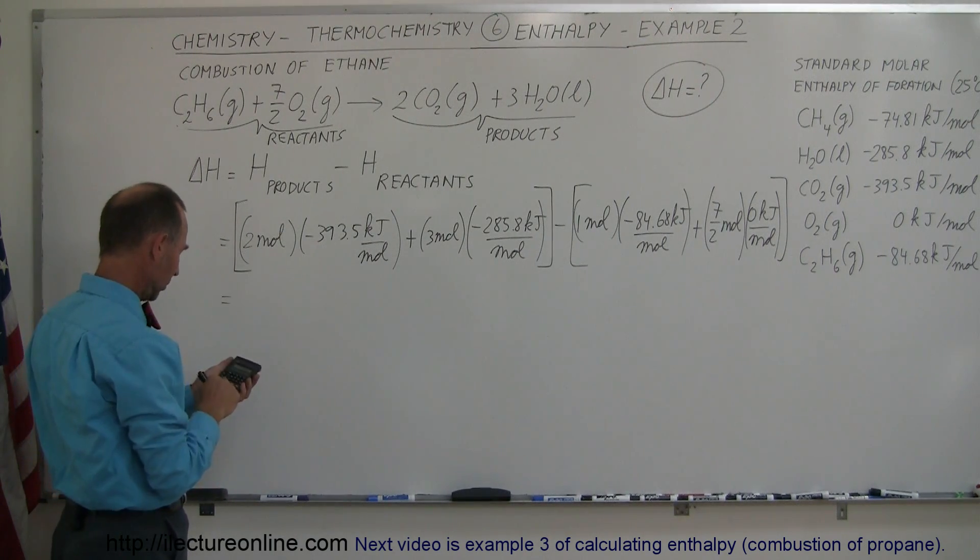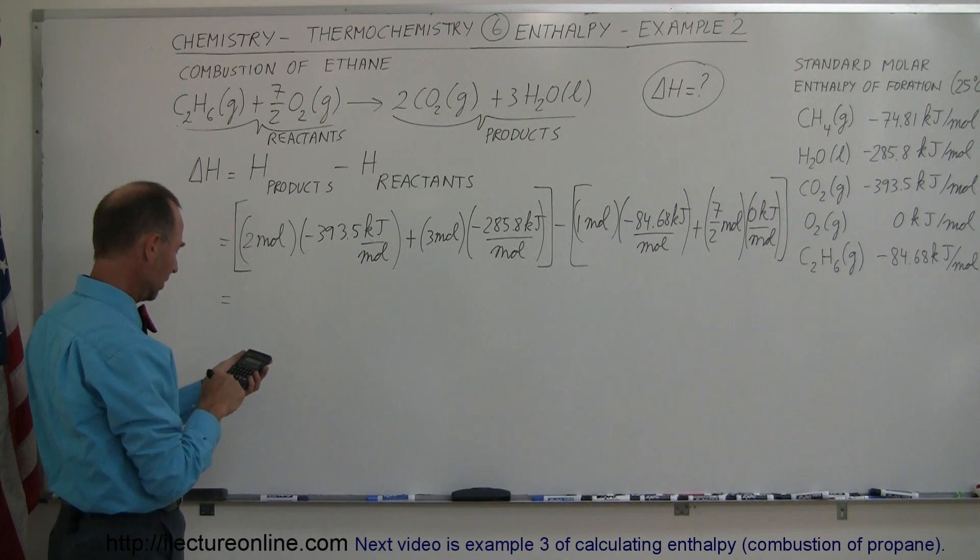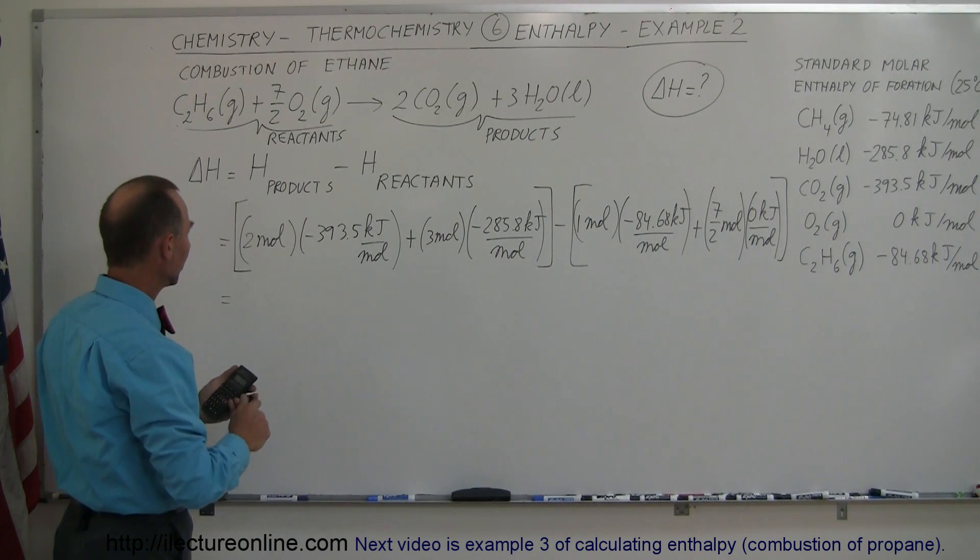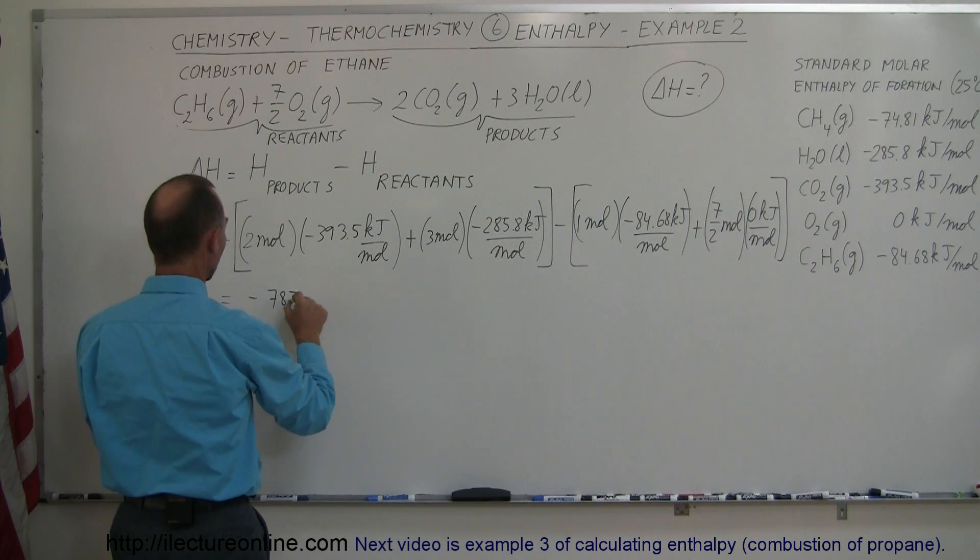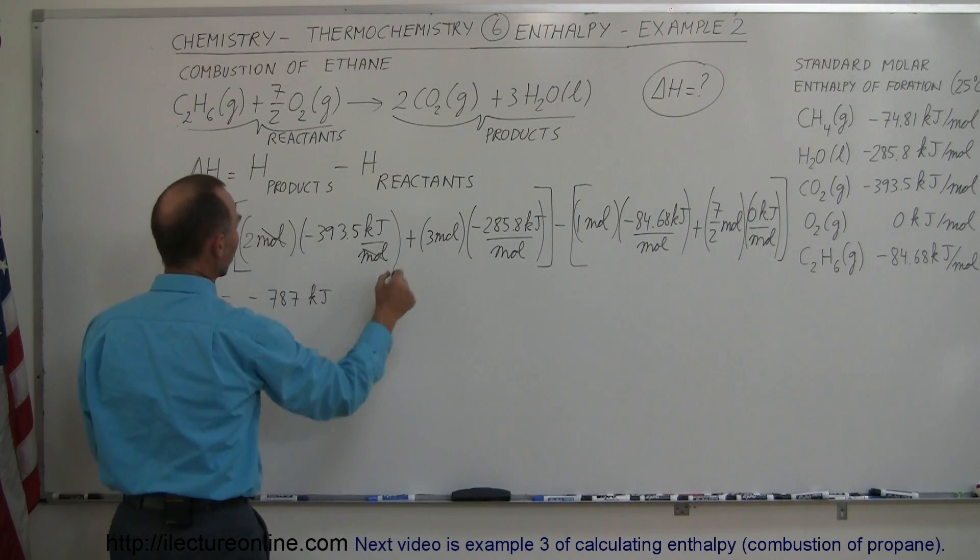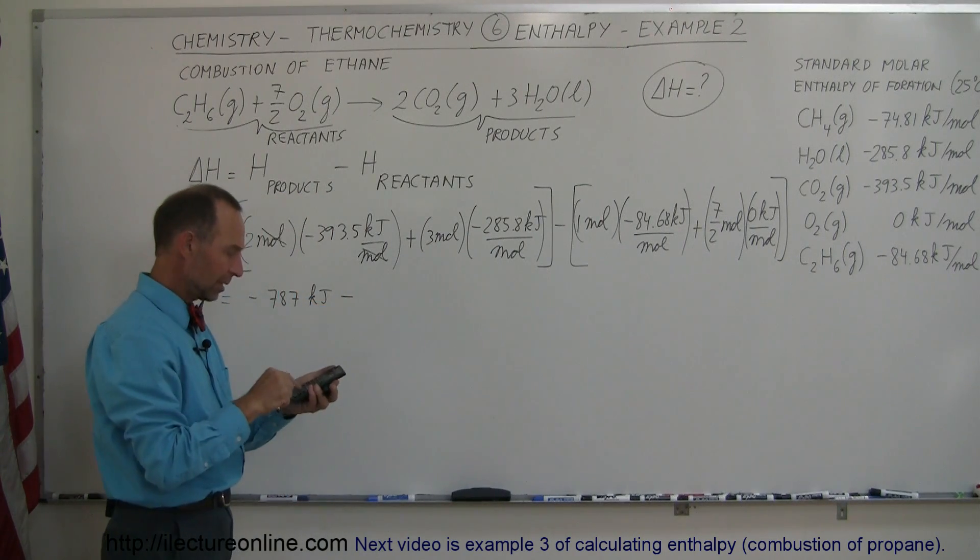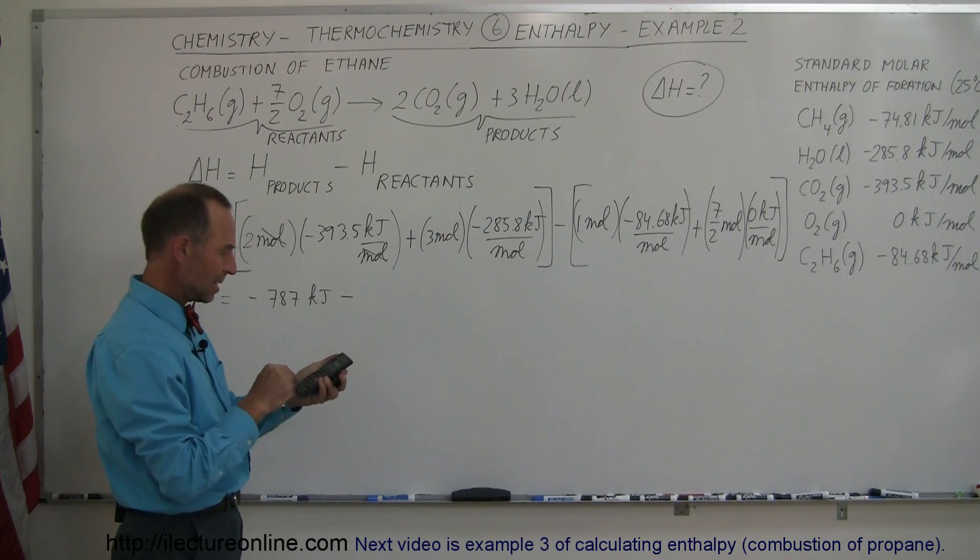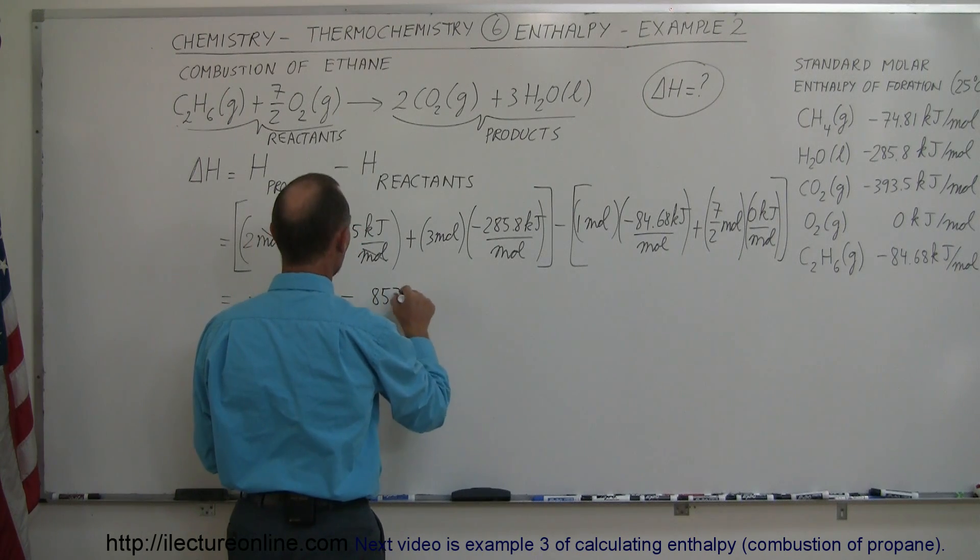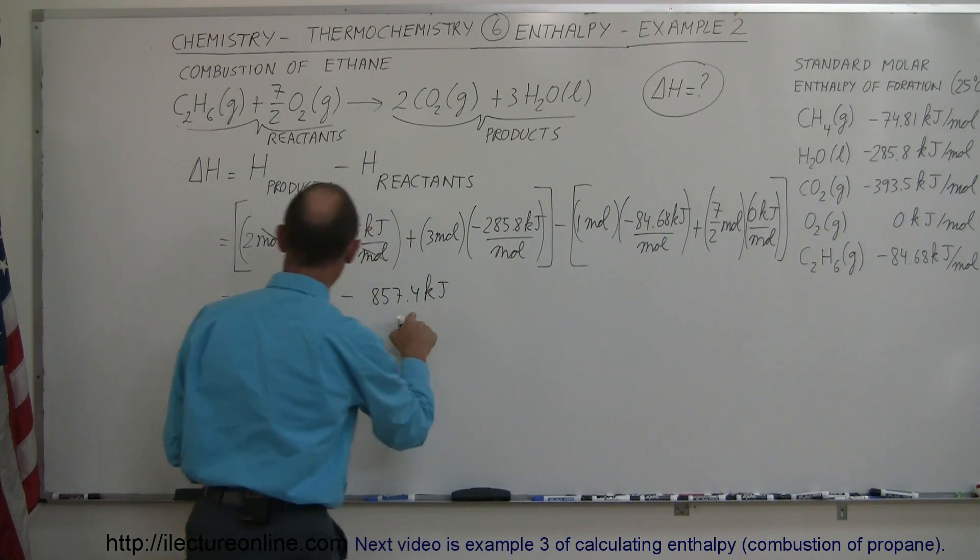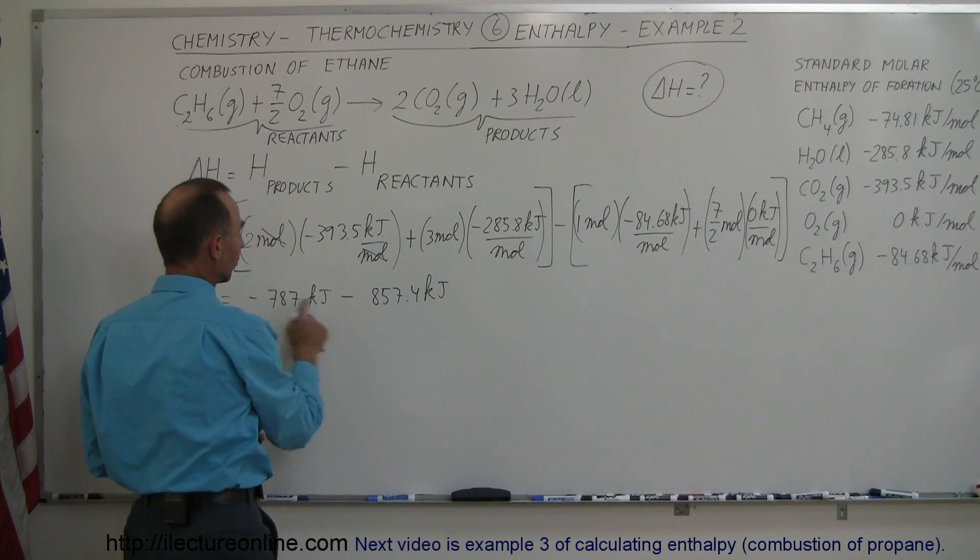So 2 times 393.5. So this is equal to minus 787 kJ. Notice that the moles cancel out. Plus a negative number, that's minus. That would be 3 times 285.8, and that would be 857.4 kJ. That's also minus, because these products are in a lower energy state than the reactants we started from. So these are negative.